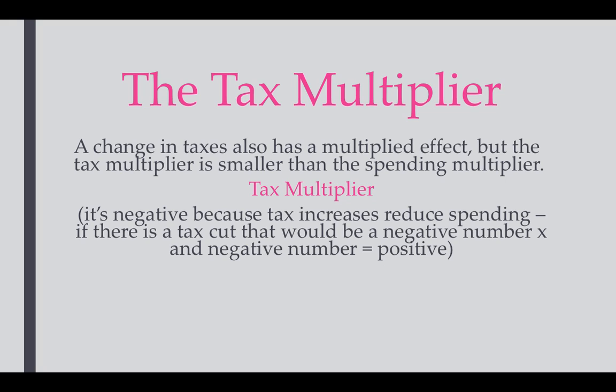When taxes go up, spending goes down and GDP decreases. A tax cut is a negative times the negative tax multiplier, making it a net positive. The formula is: negative MPC over (1 minus MPC), or negative MPC over MPS, or equivalently negative (multiplier minus 1).